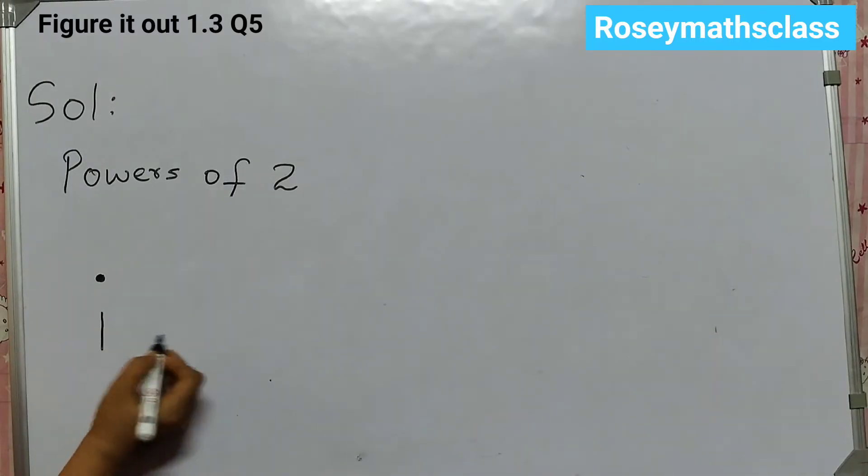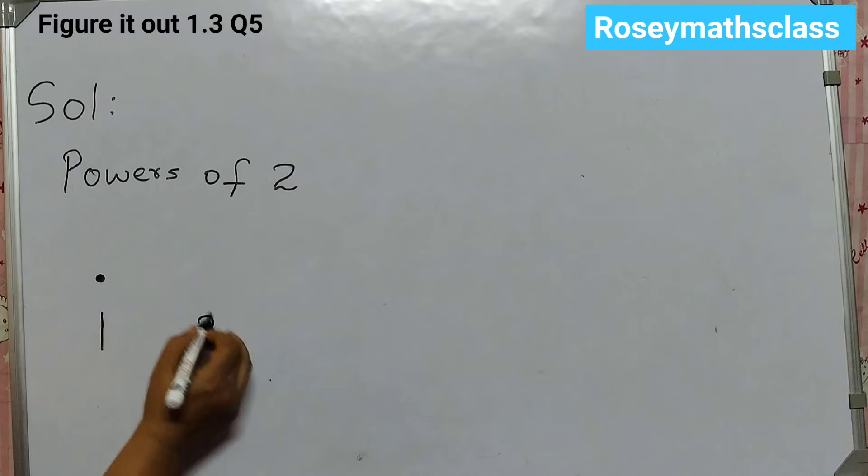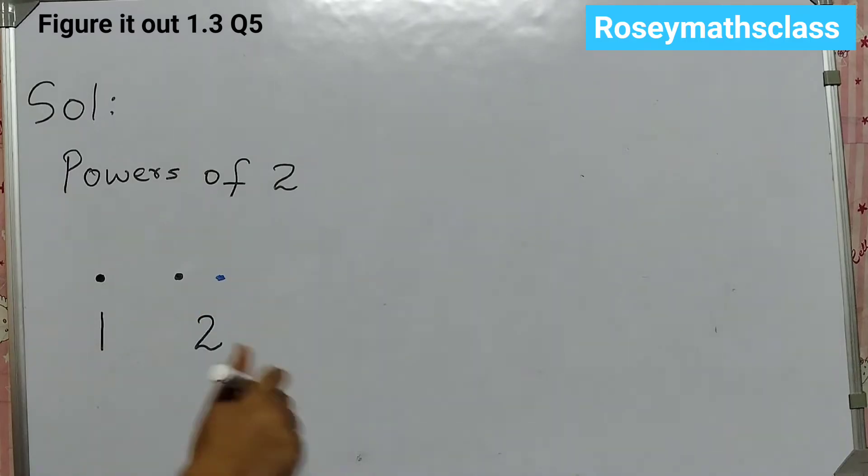First number is 1, so just 1 dot. Then we have 2, so 1 dot and then 1 more dot. And then you can just join this to show 2.